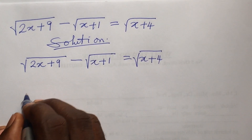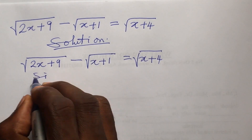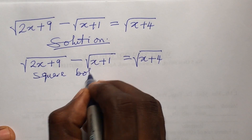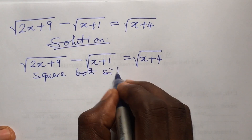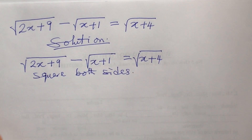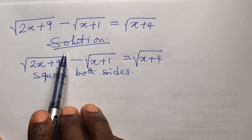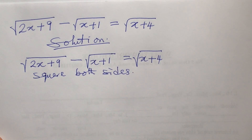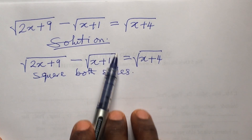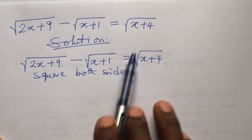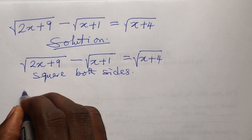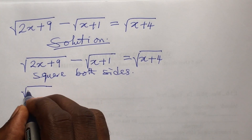Now we have to square both sides of the equation. Here comes the mistake most persons make in solving this kind of radical equation — they tend to square each term separately. By doing so you get the wrong answer. So we square the whole of the left side and we square the whole of the right hand side separately.